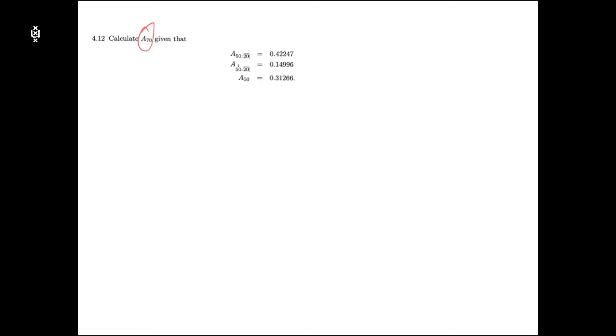A70 is the expected present value of a discrete whole life insurance product with a benefit of 1 euro payable at the end of year of death. This is the expected present value of endowment insurance.